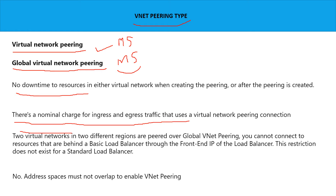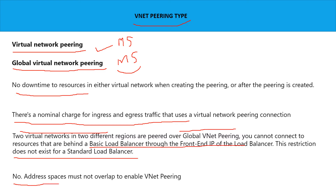When two virtual networks in two different regions are paired with global vNet peering, there is a small limitation: if vNet1 is trying to connect to vNet2 hosted in a different region and you are using a basic load balancer, you cannot connect the front-end VIPs. This restriction does not exist when you use the standard load balancer. Also, similar to traditional networking, you cannot have any IP address overlapping between the vNets.